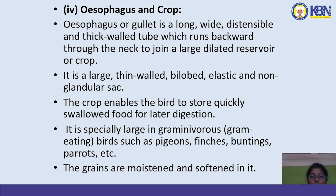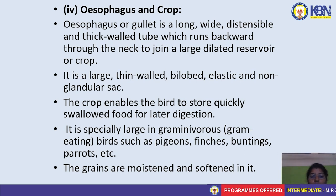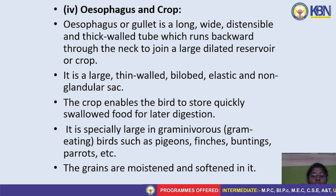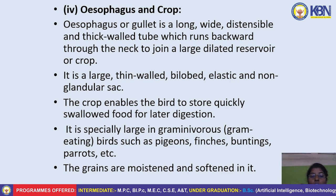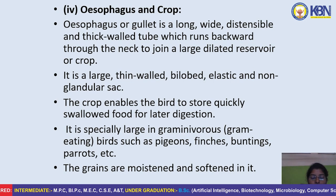The esophagus or gullet is a long, wide, distensible, thick-walled tube running backwards through the neck to join a large dilated reservoir called the crop. The crop is a large, thin-walled, bilobed, elastic, and non-glandular sac that enables the bird to store quickly swallowed food for later digestion. It is especially large in granivorous birds such as pigeons, finches, buntings, and parrots. The grains are moistened and softened in it.